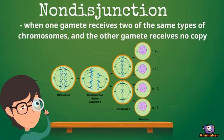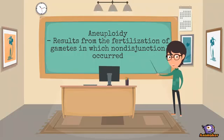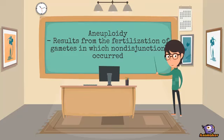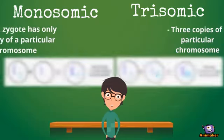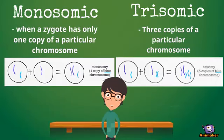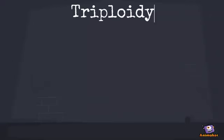Non-disjunction is when one gamete receives two copies of the same chromosome and another gamete receives nothing. Aneuploid mutations occur when non-disjunction occurs during the fertilization of gametes. Monosomic mutations have only one copy of a chromosome, while trisomic mutations have three copies of a certain chromosome.